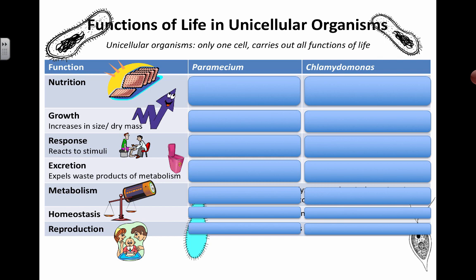We're going to take a look at functions of life, and we'll look at two specific types of unicellular organisms: the paramecium and the chlamydomonas. One of them is more animal-like and the other is more plant-like, but remember they both belong to the kingdom called Protista.